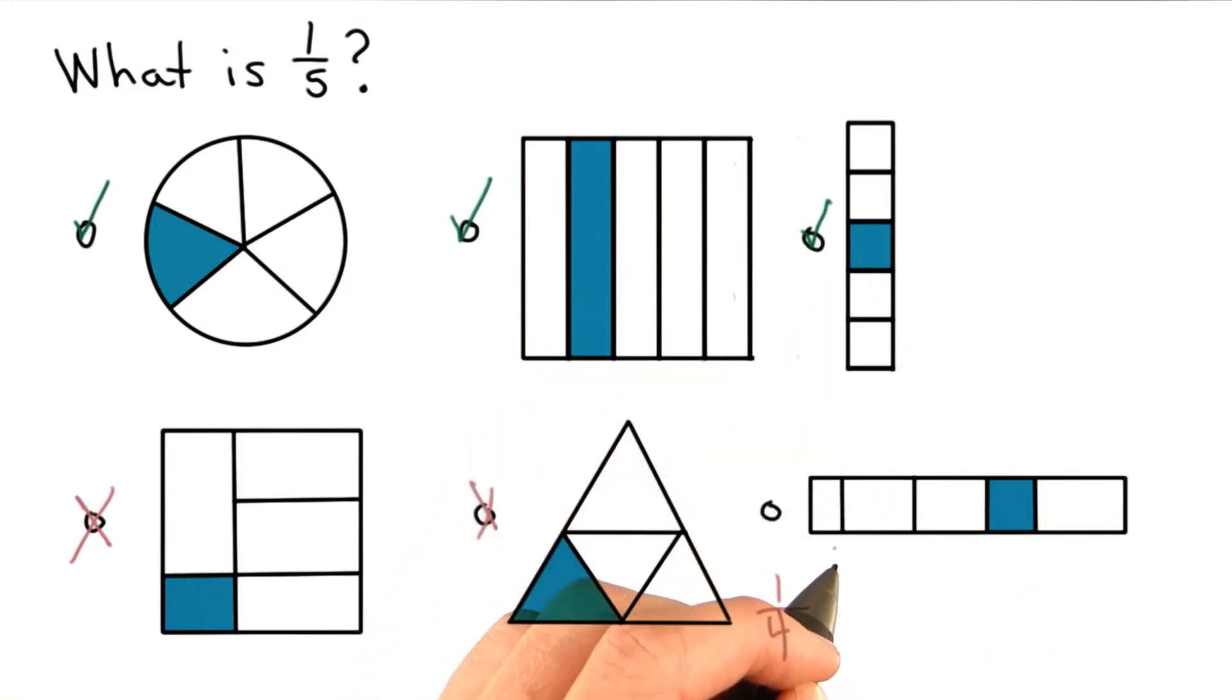This one is also not correct. I have five pieces, but they're not equally shaped. The area hasn't been divided into five equal pieces, so this can't be one-fifth of the area of the rectangle.